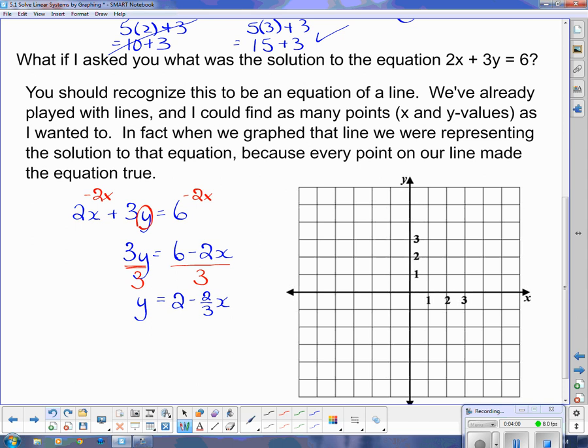Now remember, to identify slope and y-intercept, slope is the thing with the x. x isn't included, but it's the thing with the x, and the y-intercept is the thing by itself. And of course, we used m and b. Don't ask me why we use m and b. But we know the slope is negative 2 thirds, and the y-intercept is 2.